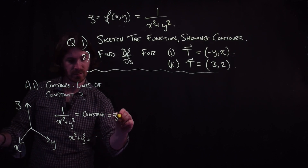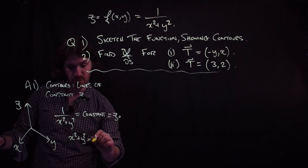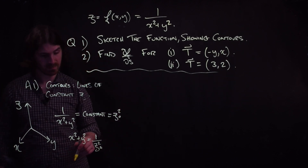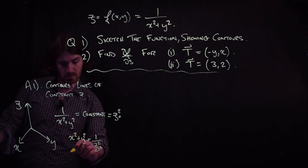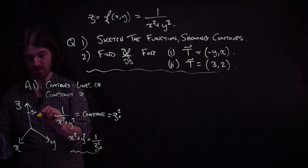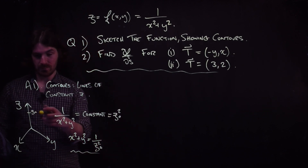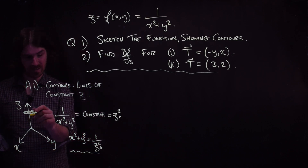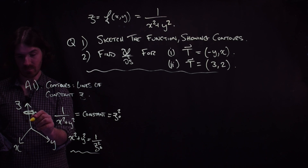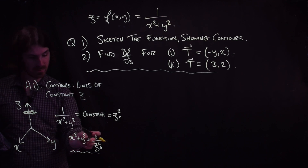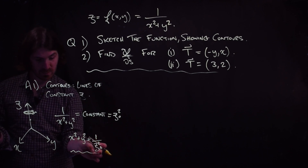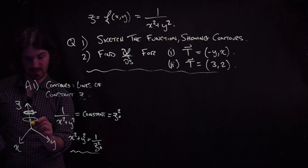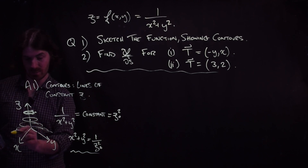Let's call this constant z0, so x squared plus y squared equals 1 over z0 — let's call it z0 squared, just to keep it easy. For a value z0, the contour is a circle. If the value of z decreases from z0 to z0 over 2, say, then because it's 1 over the value of z, z decreases, so the radius of the circle increases. As the value of z decreases, the radius of the circles describing the contours increases.